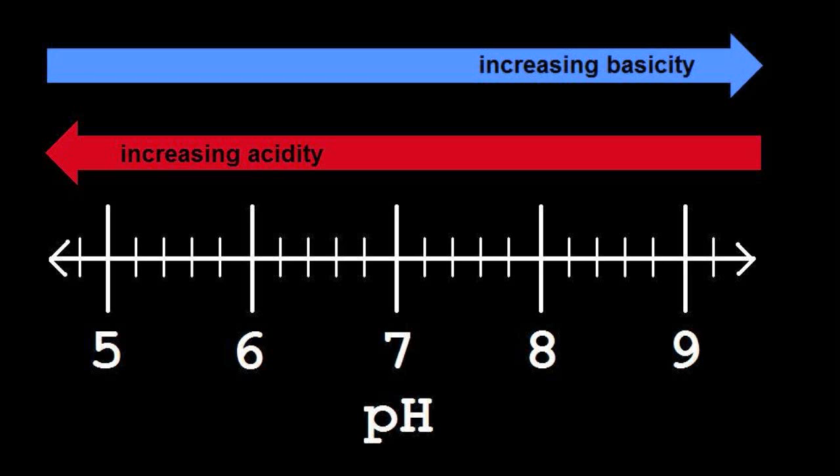Now, pH gives us an indication of how acidic or basic a substance is. The lower the pH value, the more acidic the solution, and the higher the pH value, the more basic the solution.